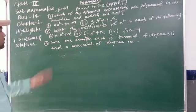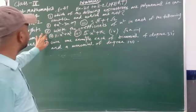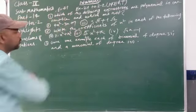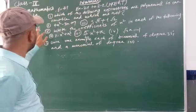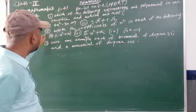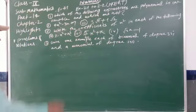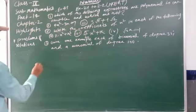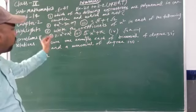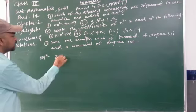Now we will talk about question number 2 of exercise 2.1. The question is: write the coefficients of x² in each of the following expressions. To find the coefficient of x², we consider the given expression and identify the number multiplied with x².